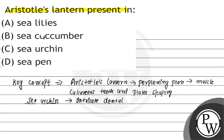यह जो teeth होते हैं, venomous भी हो सकते हैं, यानि कि जहरीले हो सकते हैं. Aristotle's lantern के teeth regularly expelled होते हैं, and they are used to scratch algae and other foods present on rocks in the sea. Few sea urchins can unearth concealing spots. The sea urchin is mainly calcium carbonate — the teeth and jaws — along with a flesh and tongue-like structure found in the sea urchin. Many species are marine invertebrates.